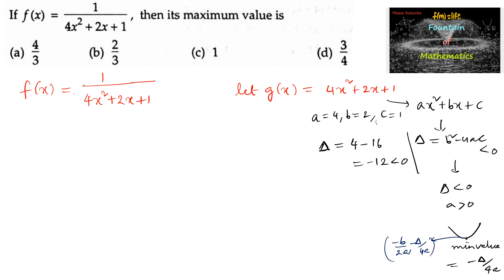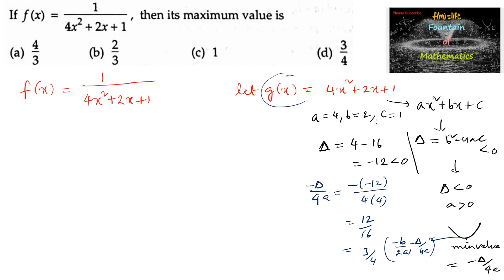So the minimum value will be minus delta by 4a. We can write minus delta by 4a equal to minus of minus 12 divided by 4 into 4, which is 12 by 16, which is 3 by 4. So g(x) has a minimum value equal to 3 by 4.